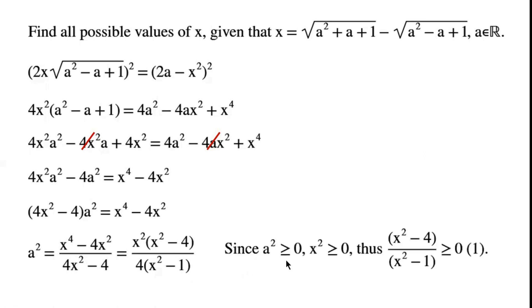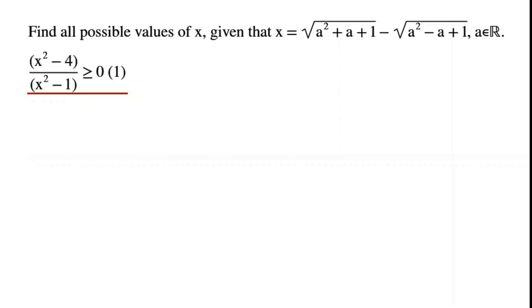Since a squared is greater than or equal to 0, x squared times x squared minus 4 over 4 times x squared minus 1 must also be greater than or equal to 0. Thus, x squared minus 4 over x squared minus 1 is greater than or equal to 0. We derive Inequality 1.